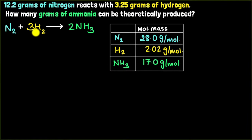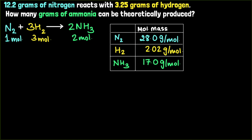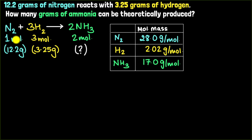Let's do another problem. We are reacting nitrogen with hydrogen to get ammonia. We're given 12.2 grams of nitrogen reacting with 3.25 grams of hydrogen, and we have to calculate how many grams of ammonia can be theoretically produced. The equation is balanced — that's the first step. The mole ratio is: one mole of N₂ reacts with three moles of H₂ to give two moles of NH₃. The first step is to figure out which reactant is limiting.